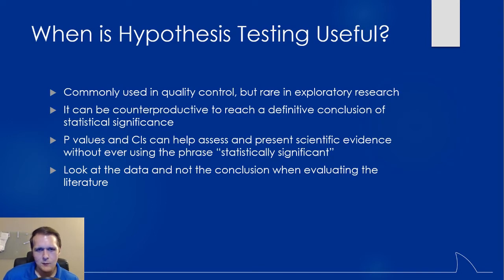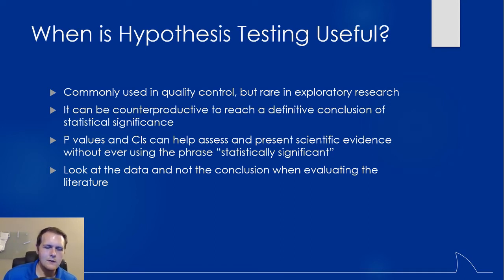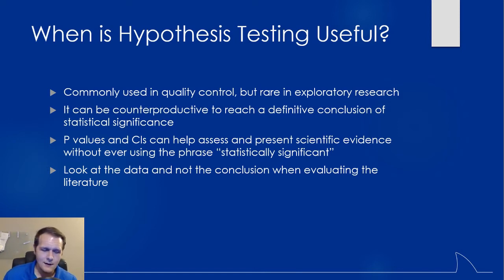Hypothesis testing may be seen in quality control but not so much in exploratory research. By looking at p-values and confidence intervals and how they correlate with the actual numbers presented, we never have to really use the term statistically significant. The numbers can speak for themselves, and it's better to actually look at the data rather than letting someone else tell us the conclusion. I want to train you not to just say 'they said it's statistically significant, so I must be able to use this drug.' Look at the data — maybe the p-value is less than 0.05, but clinically it doesn't actually matter.